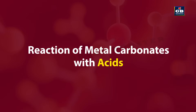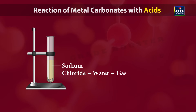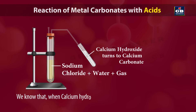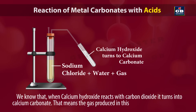Reaction of metal carbonates with acids. Take 0.5 grams of a metal carbonate like sodium carbonate and add 2 ml of dilute HCl. It forms a salt that is sodium chloride, water and a gas. This gas, when passed through calcium hydroxide solution, forms a white precipitate that is calcium carbonate. We know that when calcium hydroxide reacts with carbon dioxide, it turns into calcium carbonate — meaning the gas produced is carbon dioxide.